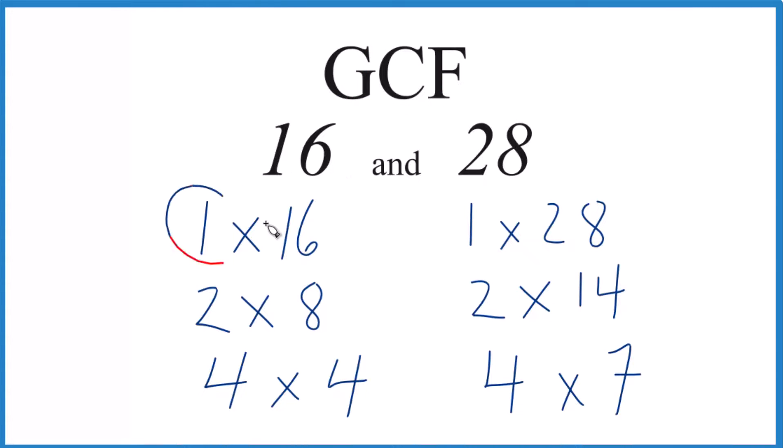So 1, that goes into 16 and 28. That's a common factor. 2, that also goes into 16 and 28. And then we have 4 here, and it looks like 4 is going to be the greatest common factor.